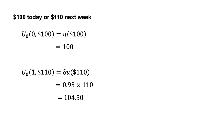We write the discounted utility of the $110 next week as u₀(1, $110). The subscript 0 indicates the utility is calculated at t equals 0. The first number in the brackets indicates the time of payment, t equals 1. The second number is the value of the payment. The discounted utility u₀(1, $110) equals delta times u($110), which equals 0.95 times 110, which equals 104.5.